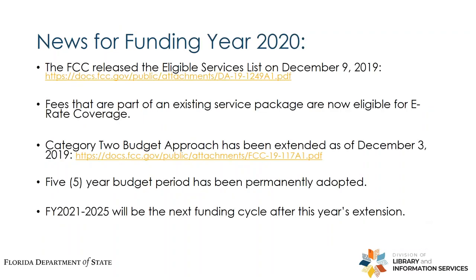I'd like to talk about some of the relatively recent developments in the program. The FCC released this year's eligible services list back in December of 2019 — the link is there. Sadly, for a lot of you whose requests I do hear and refer to the ALA to pass along to USAC: circulating hotspots are not on the eligible services list for this year. I hear you — I want it too.